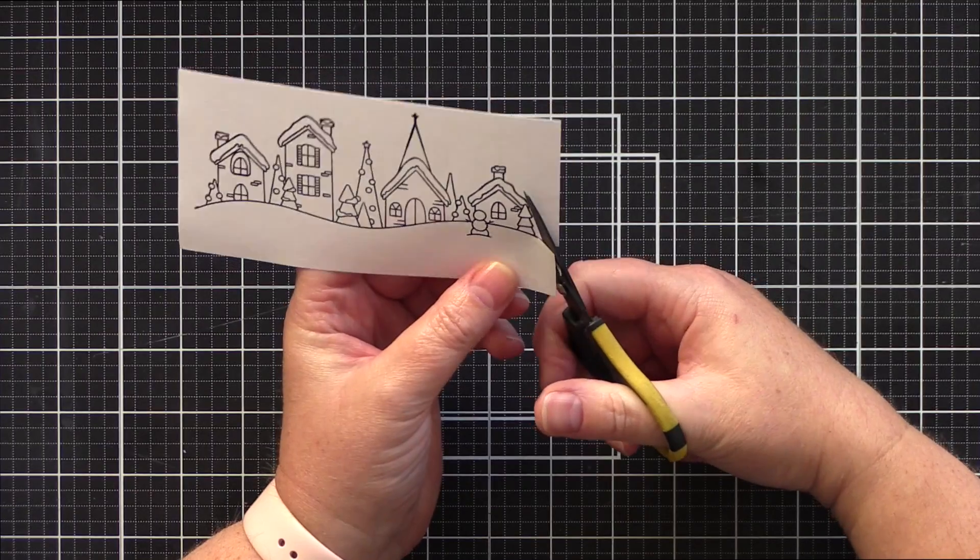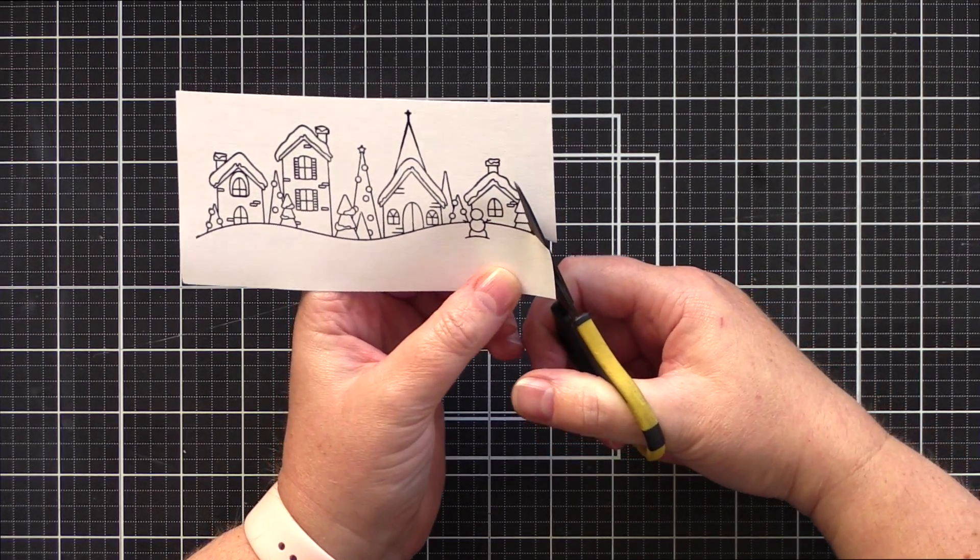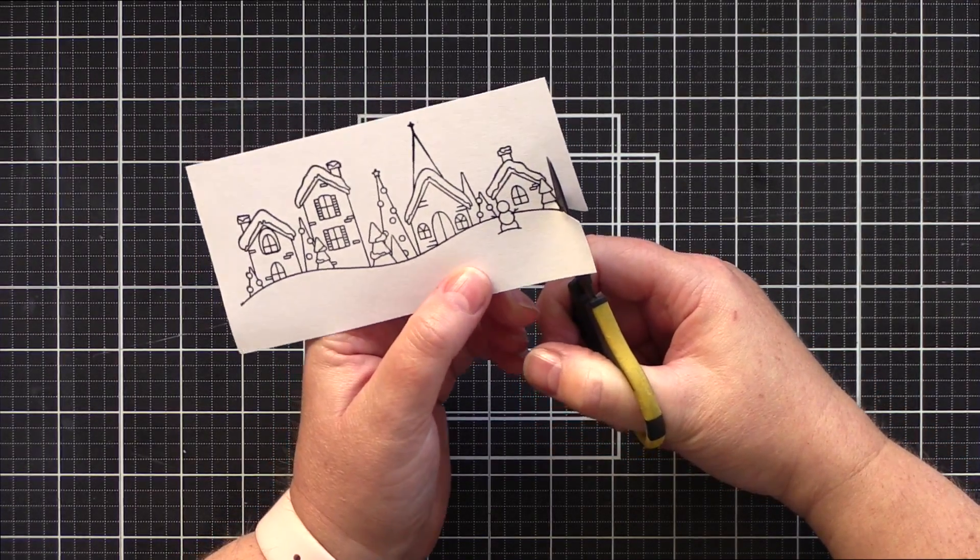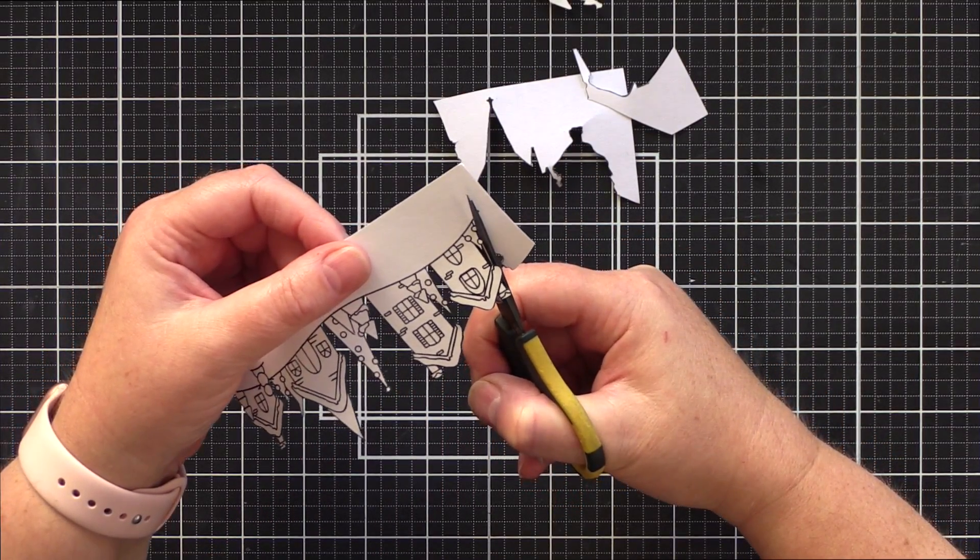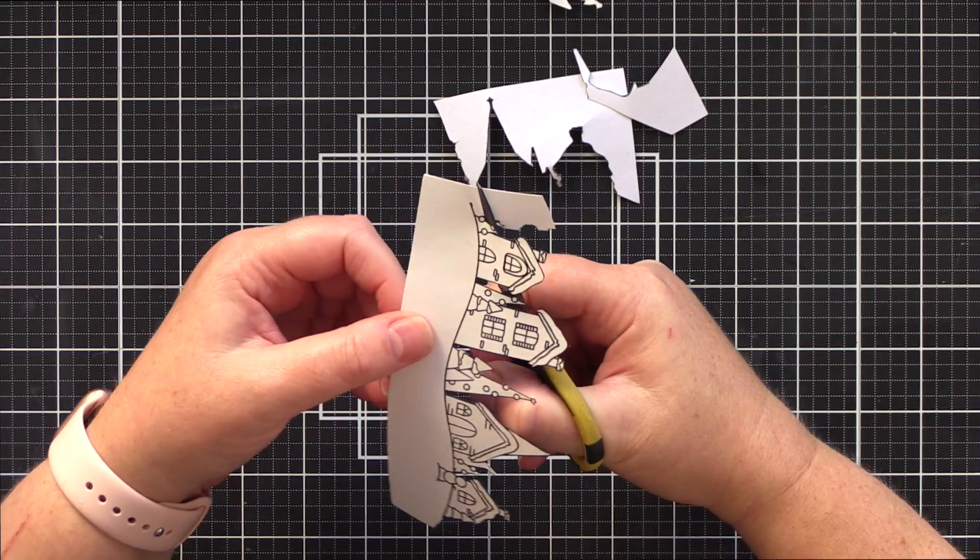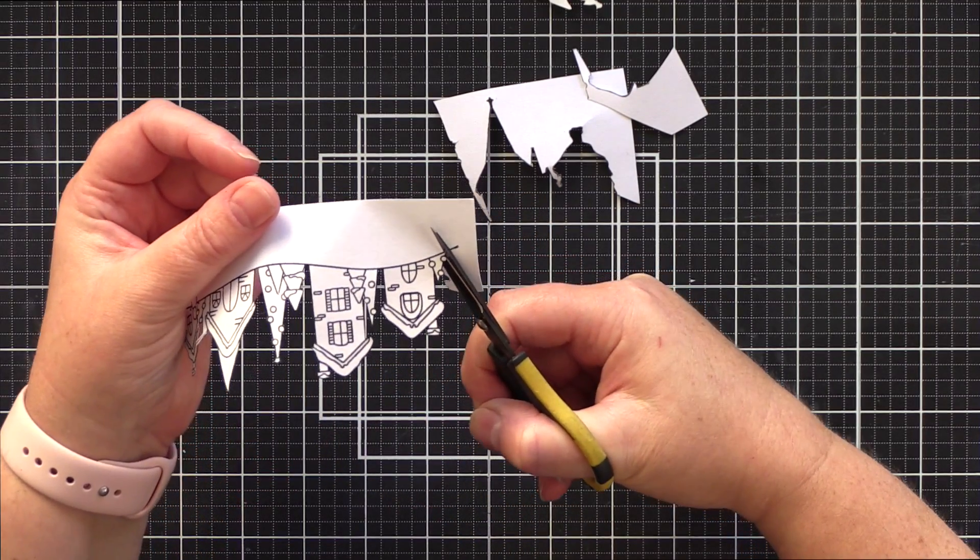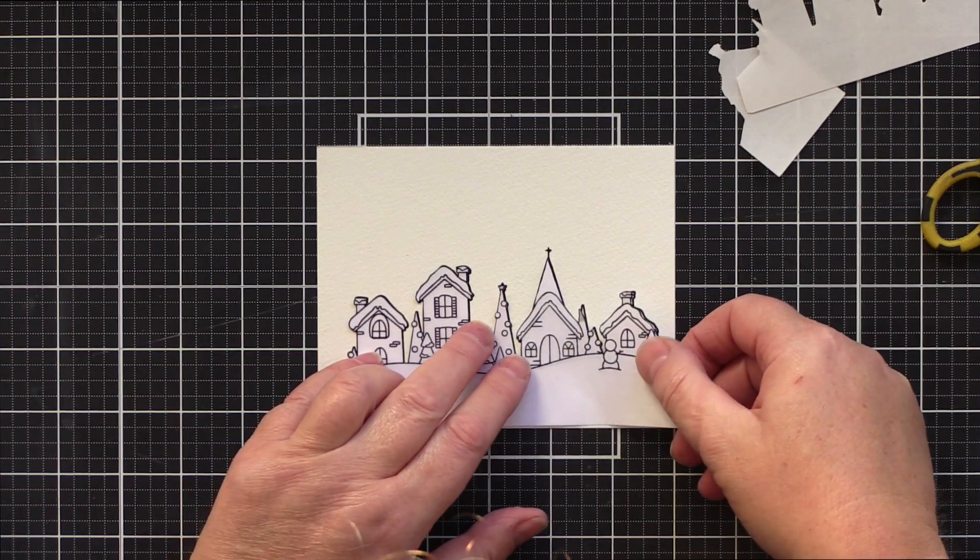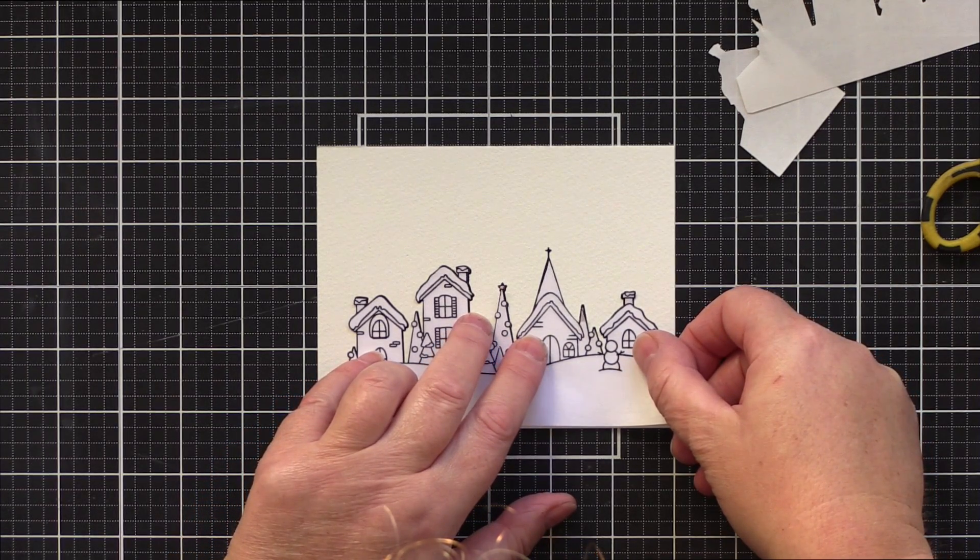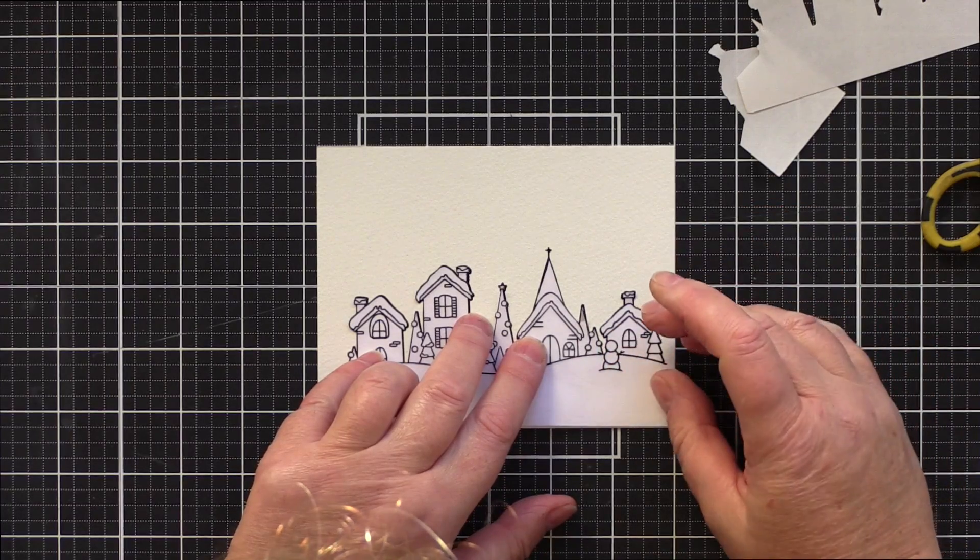I carefully fussy cut the mask and one tip when doing this is to cut on or slightly into the black stamp lines. This way there is no extra mask covering the background and causing white highlights where you don't want them. Once the mask was fully trimmed out, I peeled off the backing paper and then carefully added it over the image on the watercolour card and pressed down firmly.